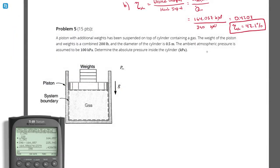Problem number five: a piston with additional weights has been suspended on top of a cylinder containing a gas. The weight of the piston and weights combined is 200 pounds and the diameter of the cylinder is 0.5 meters. The ambient atmospheric pressure is assumed to be 100 kilopascals. Determine the absolute pressure inside the cylinder in kilopascals.